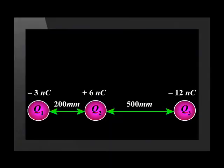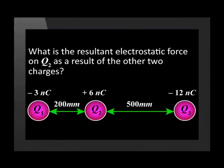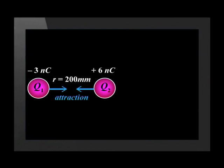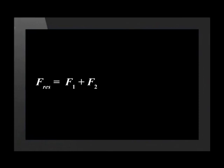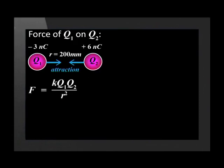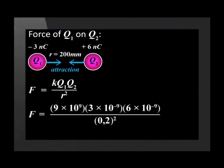Three point charges are in a straight line, with their charges and distances shown. What is the resultant electrostatic force on Q2 as the result of the other two charges? We need two separate calculations. We first calculate the electrostatic force between Q1 and Q2, then between Q2 and Q3, and then the resultant force on Q2. We use Coulomb's law, substituting the charges on Q1 and Q2 and the distance between Q1 and Q2.